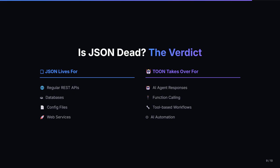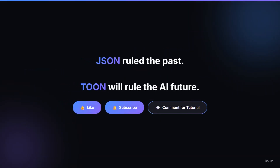But — and this is important — JSON is no longer enough for AI-powered applications. JSON will stay for regular APIs, databases, and config files. These are deterministic systems where JSON excels. But TOON will take over for AI agents, function calling, tools, workflows, and AI automation — these need structured, reliable outputs. In the AI world, TOON is the new standard. TOON takes over for AI agent responses, function calling, tool-based workflows, and AI automations. JSON ruled the past, but TOON will rule the AI future — that's the truth.